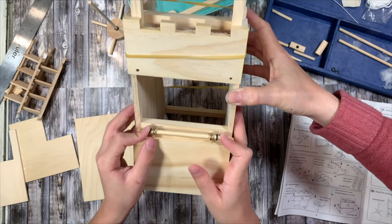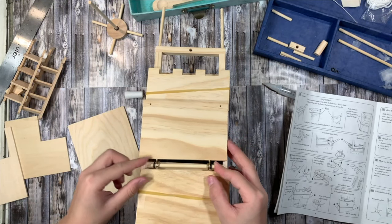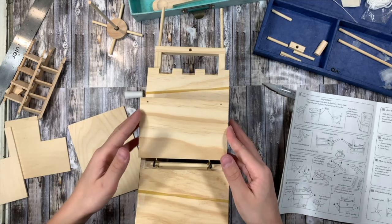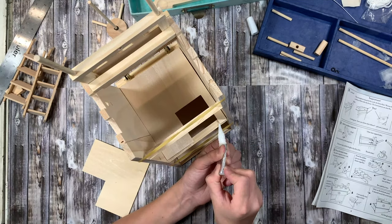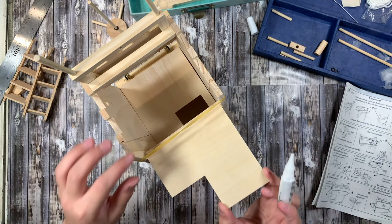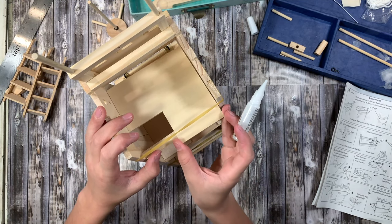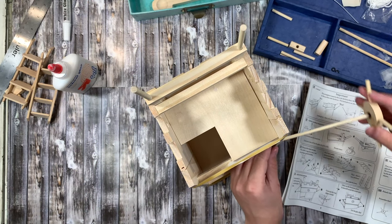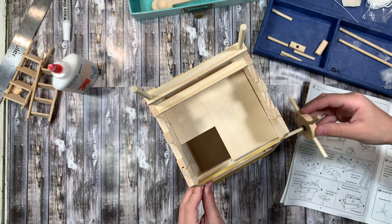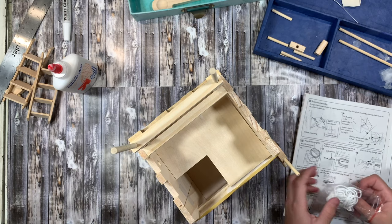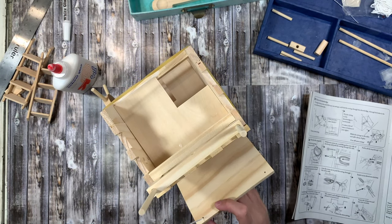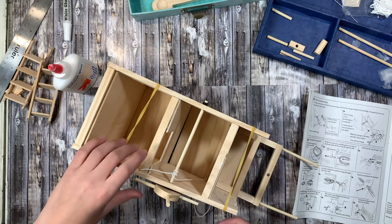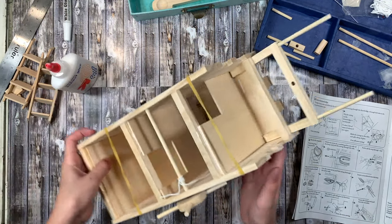I think there's only the trebuchet and the catapult from the very first time we did this main lesson block that we finally had to discard because it was broken beyond repair, but for the most part they work really well, they function amazingly well, they really do knock down castles as you will see at the very end of this video.